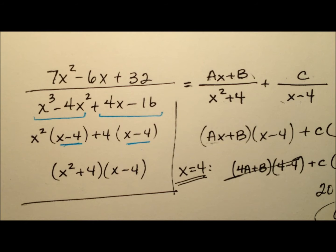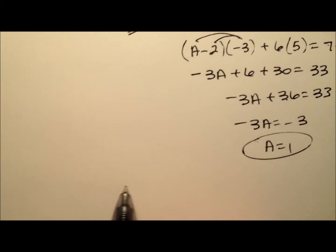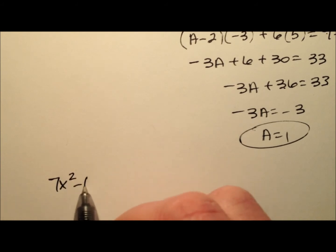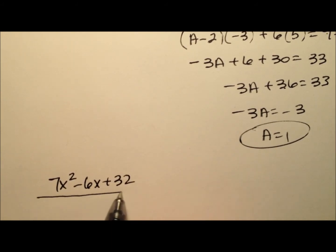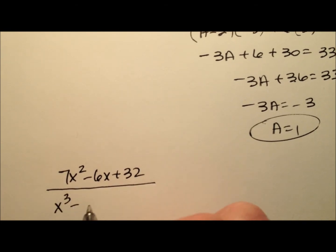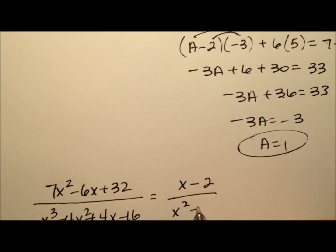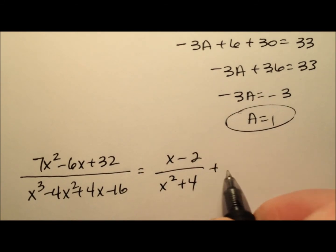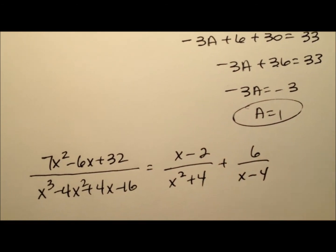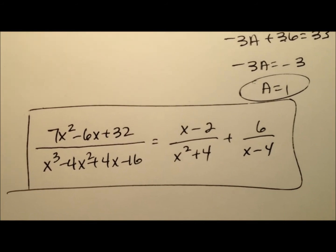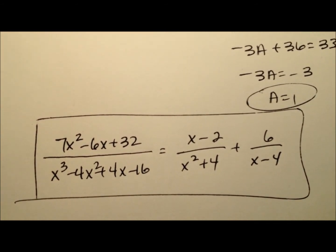So let's write out the final partial fraction decomposition in its entirety. We have: 7x squared minus 6x plus 32 over x cubed minus 4x squared plus 4x minus 16 equals x minus 2 over x squared plus 4, plus 6 over x minus 4. We have completed this partial fraction decomposition, which was the first example including a quadratic in the denominator.